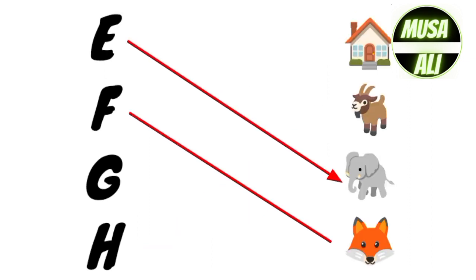E for Elephant, F for Fox, G for God, H for House.